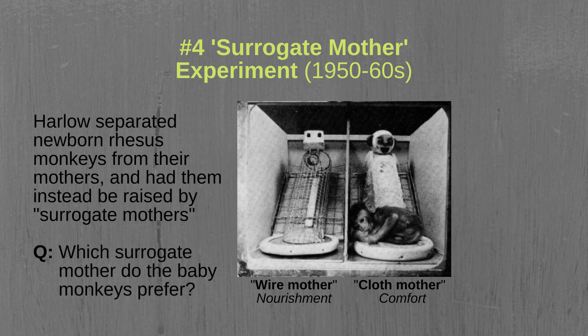The question became: which of these surrogate mothers would the newborn monkeys prefer? The results showed that the monkeys would spend much more time with the cloth mother and would seek it for comfort and security when faced with threatening situations. They would only seek the wire mother for nourishment. This experiment was influential in the study of childhood attachments and provided insights into the importance of comfort and physical bodily contact.